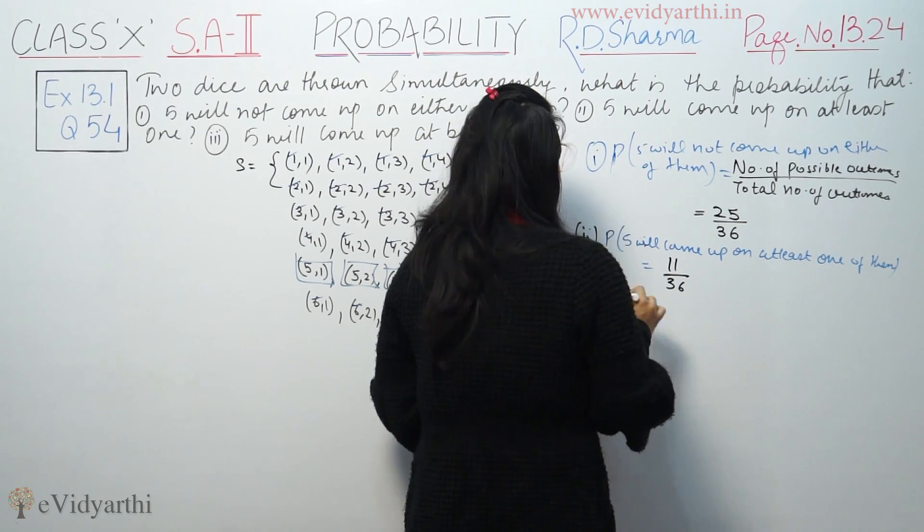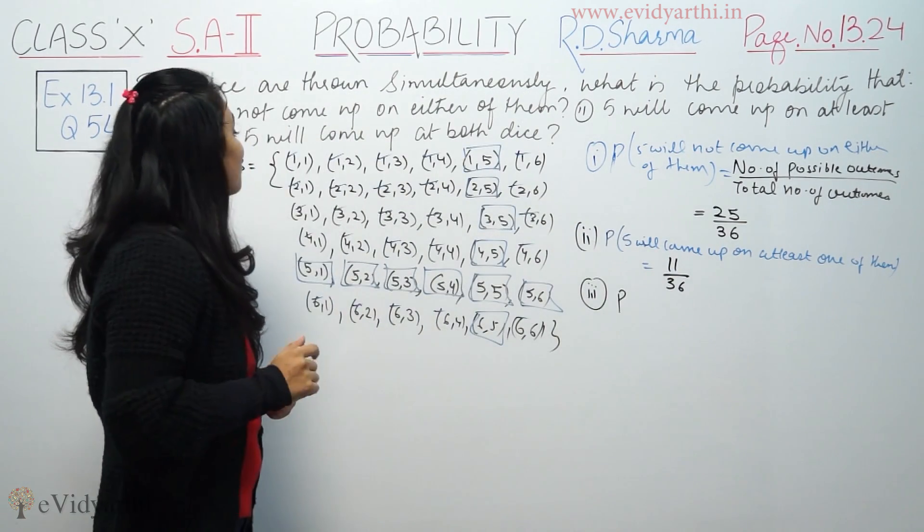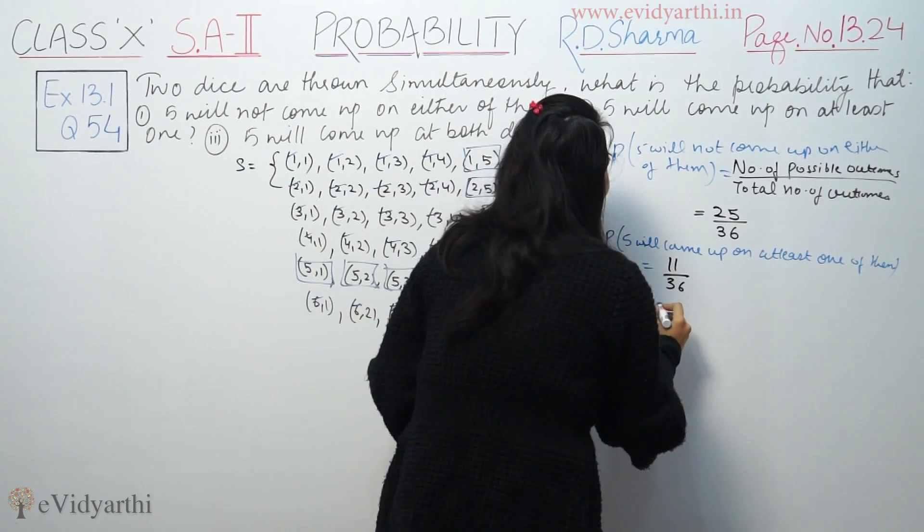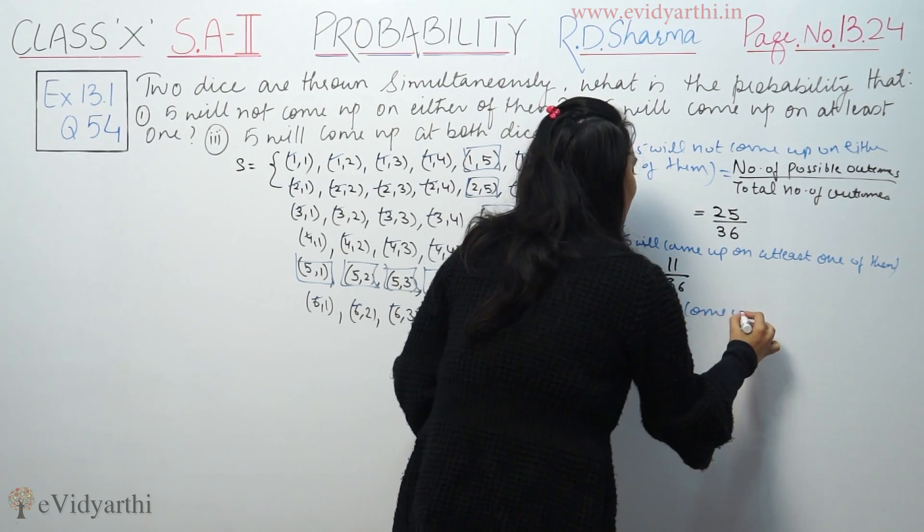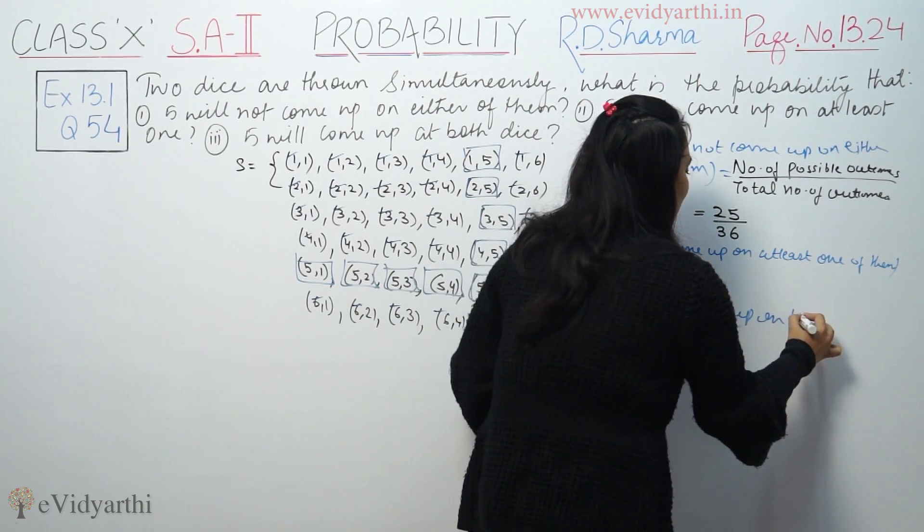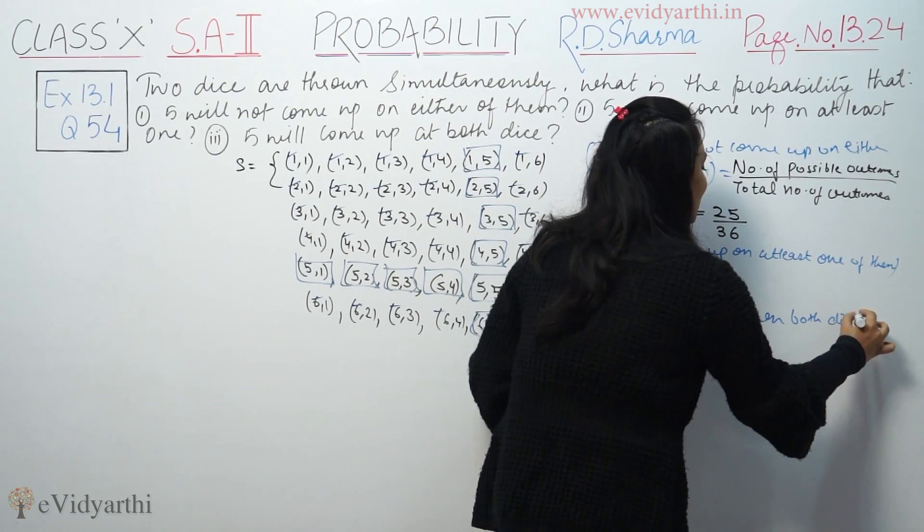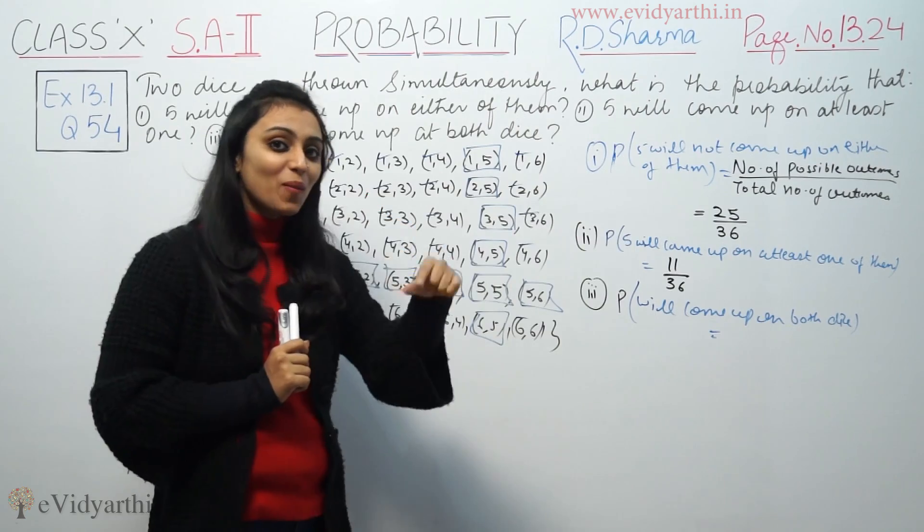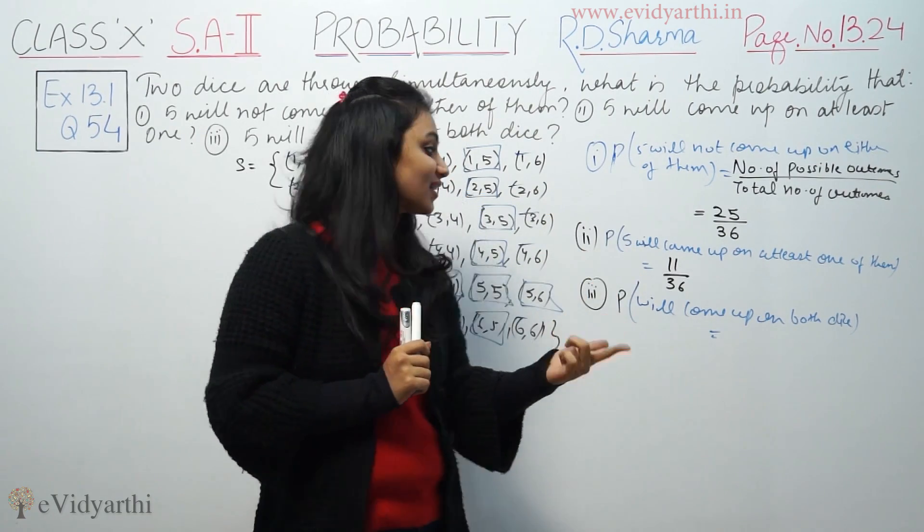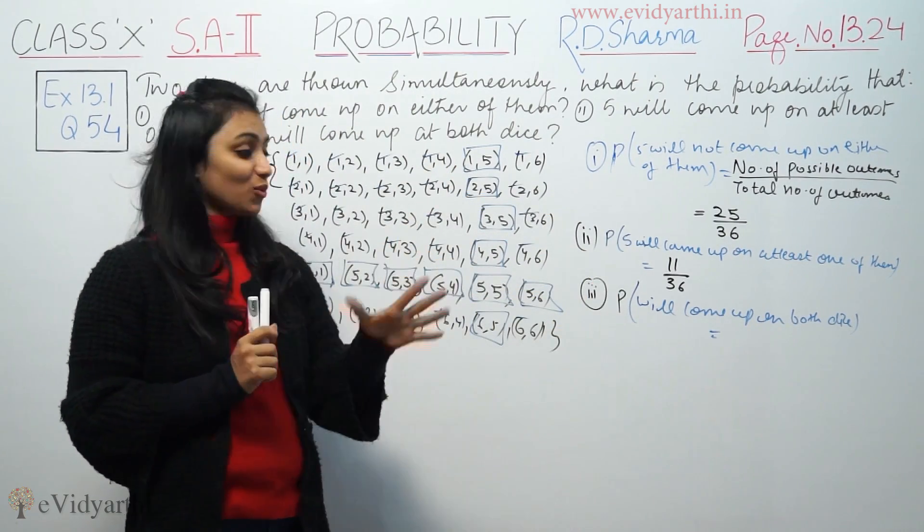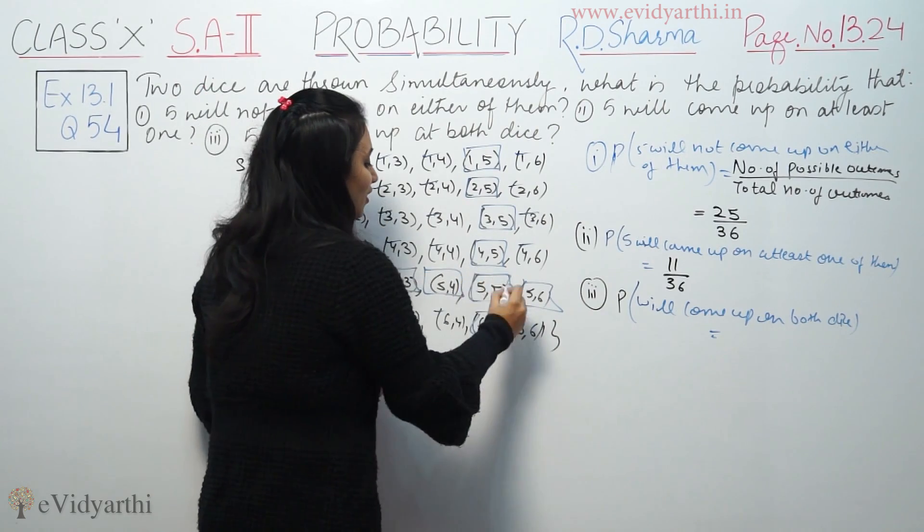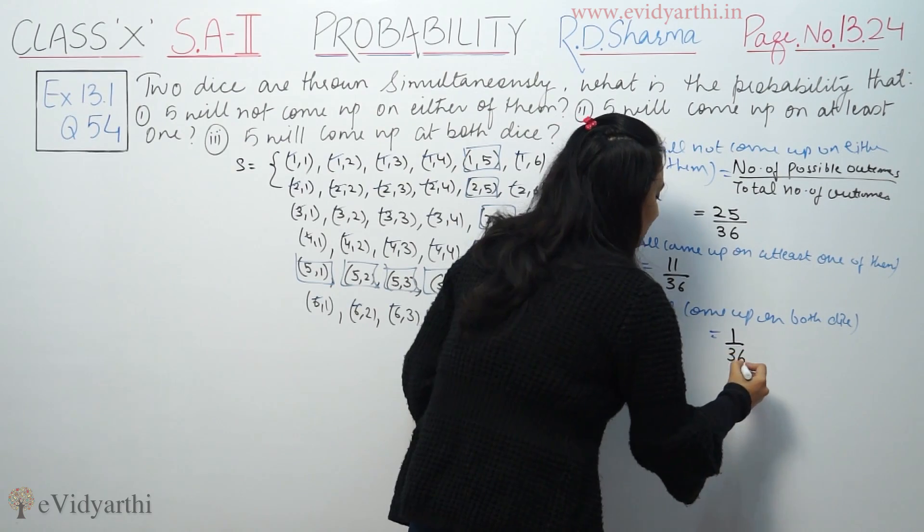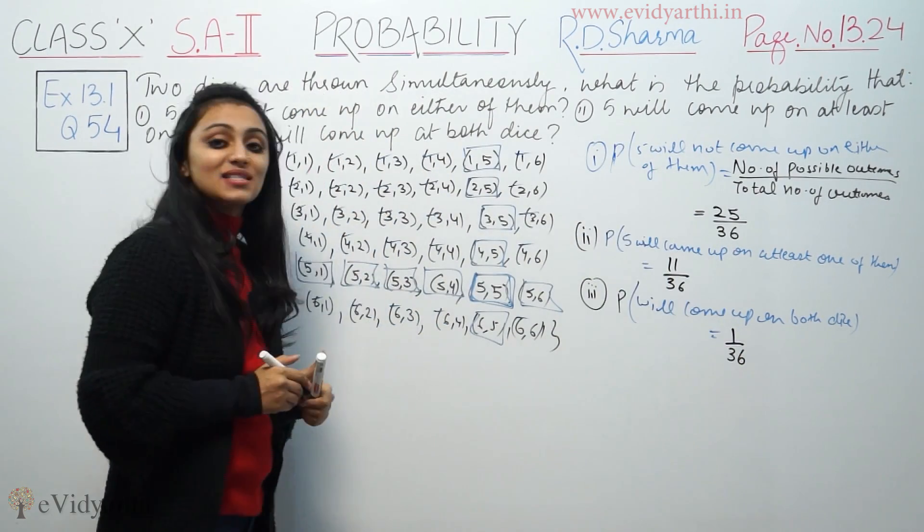Part number three: probability that five will come up at both dice. If you want five to come up on both dice, then you have only one case: 5 comma 5. So the answer is 1 upon 36. This is the probability.